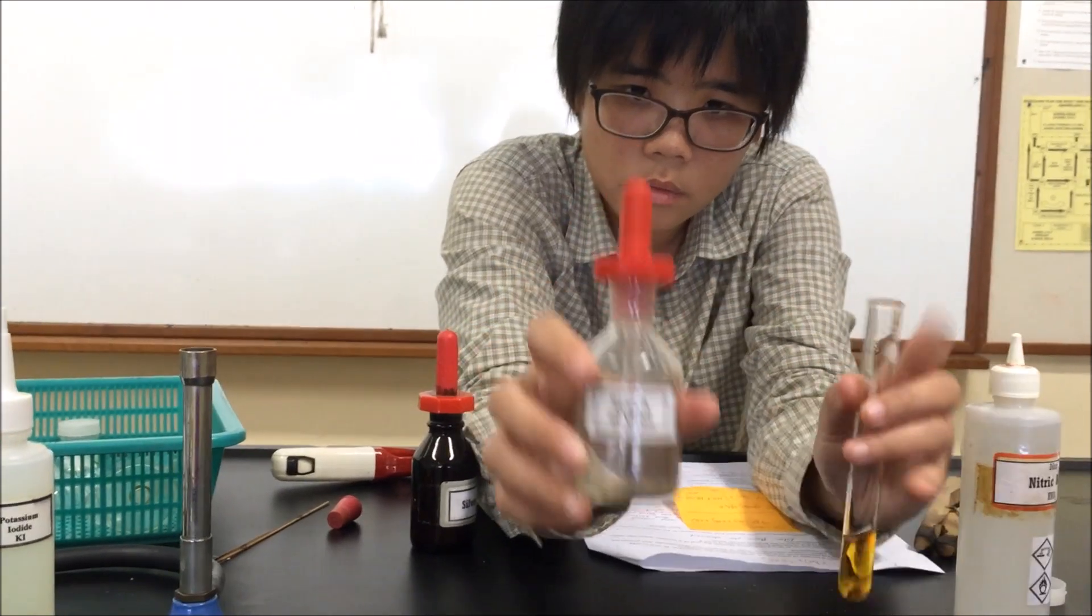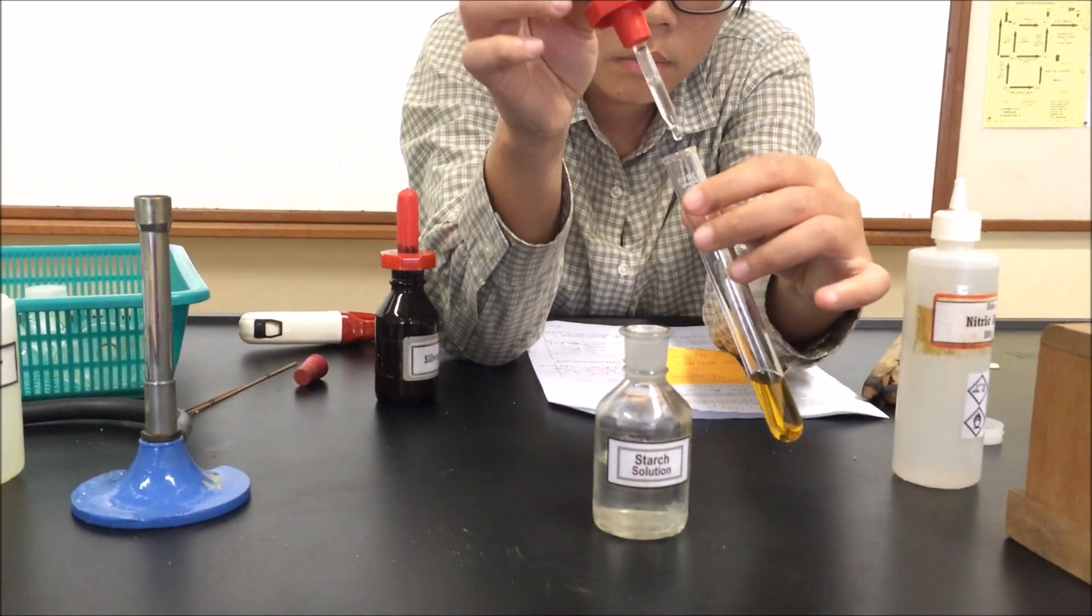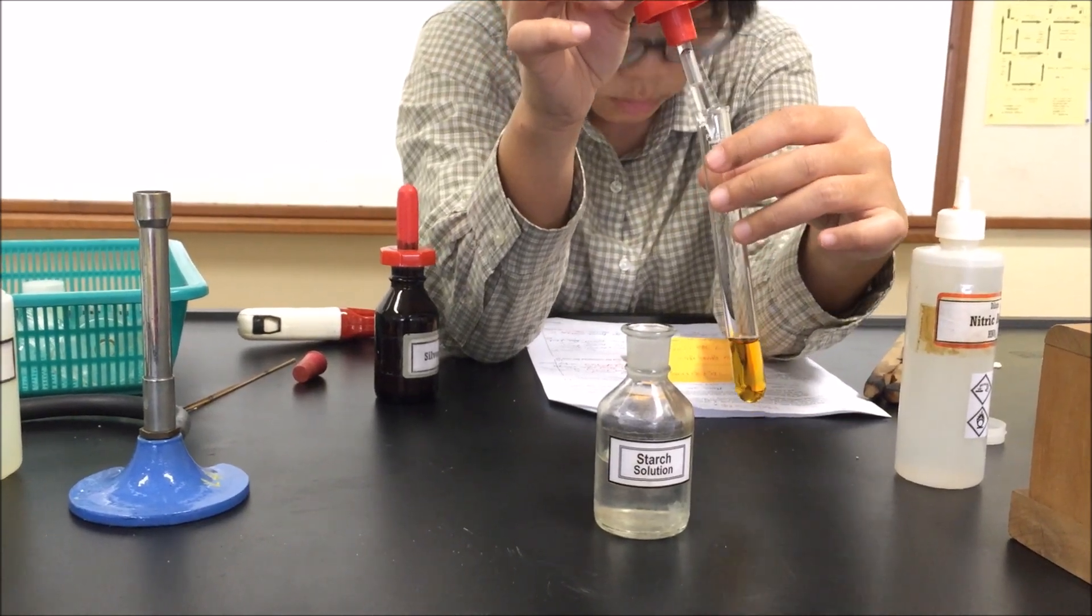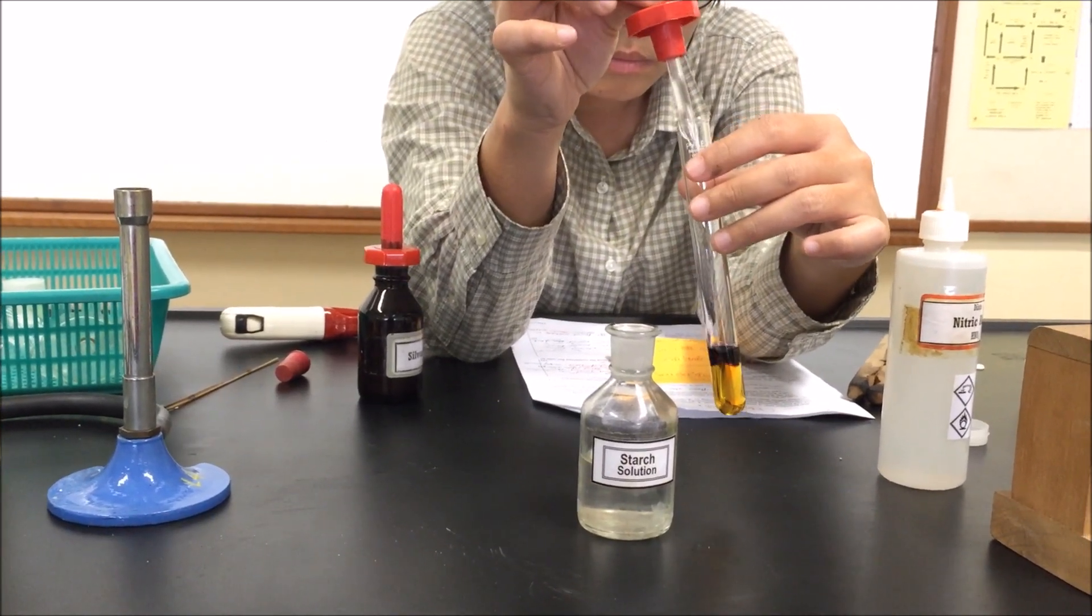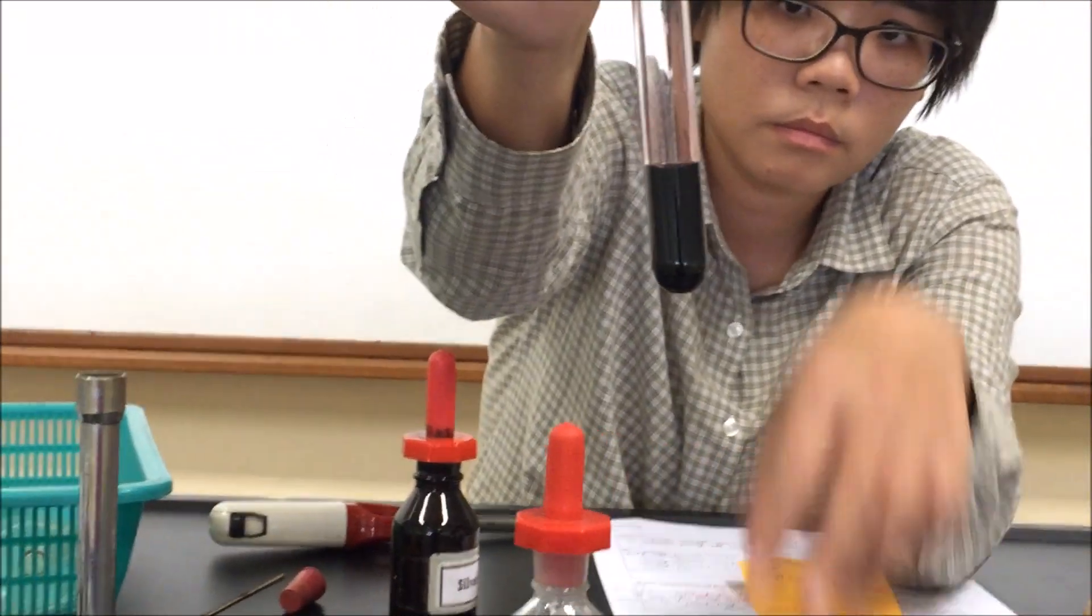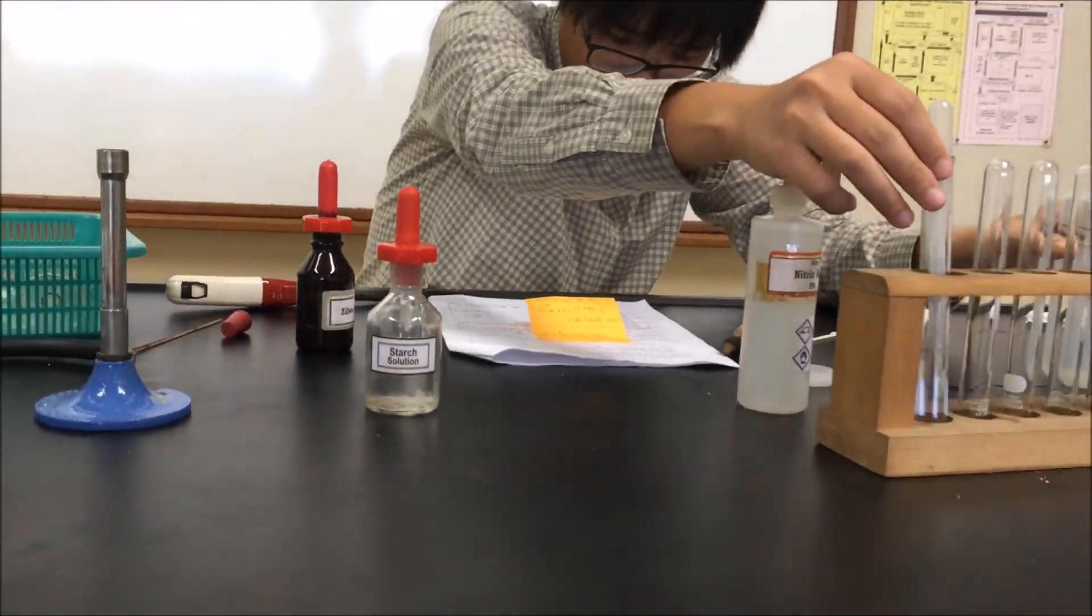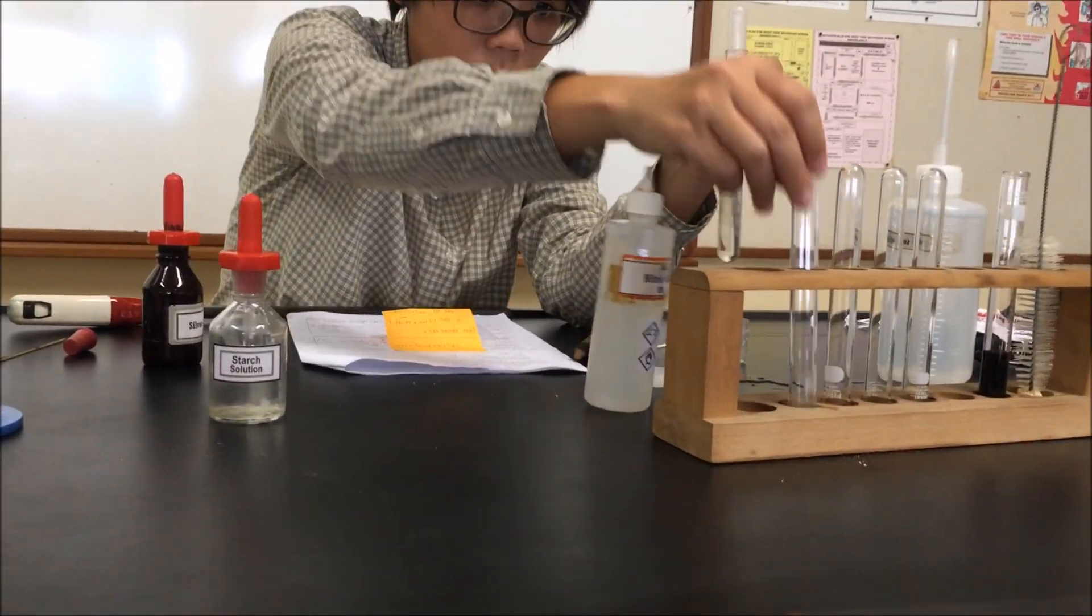Then we're going to proceed to add starch solution, 2 to 4 drops. Always shake to mix as well. And then you get a blue black, dark blue solution.